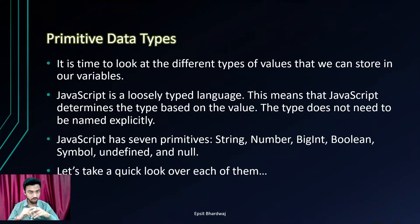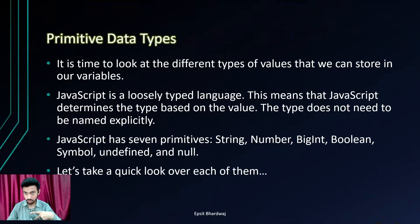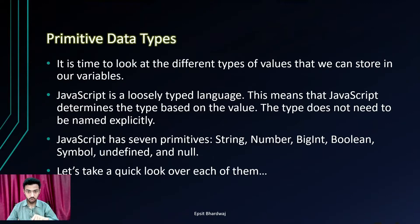For now, JavaScript has seven primitives: String, Number, BigInt, Boolean, Symbol, Undefined, and Null. Let's take a quick look over each of them.